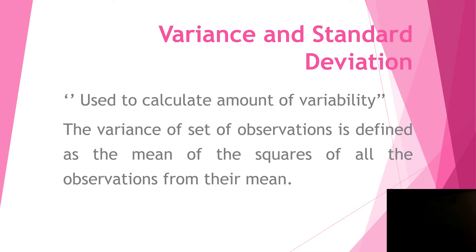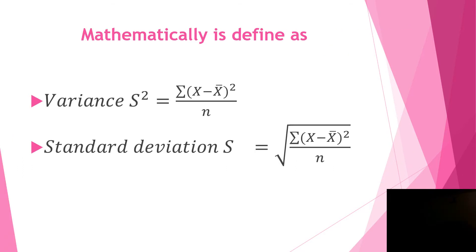If we compare with the mean deviation as we discussed before, we were using the absolute value of (x minus x̄), but here in variance we use the squares. That is the difference — we replace the absolute value with squares. Variance is denoted by s² when we deal with a sample.